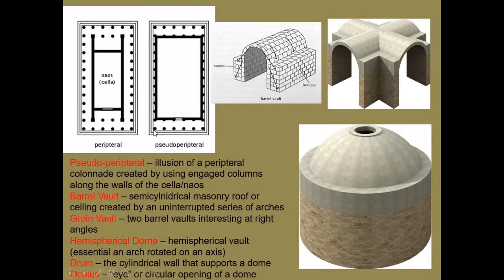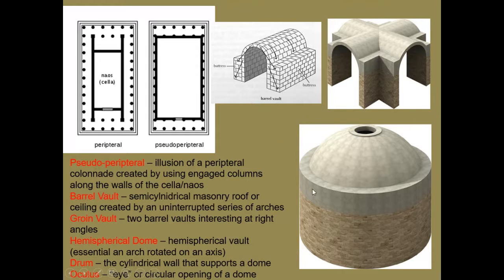The new design starting here in Rome is what we refer to as pseudo-peripteral — peripteral meaning columns all the way around the outside, pseudo-peripteral being the fusion of those continuous columns created by engaged columns along much expanded walls. The concept of a barrel vault comes from extending an arch into a long hallway. We now have that smooth rounded barrel created by stacking multiple arches one behind the other. When two such barrel-vaulted hallways at 90-degree angles intersect, we have what we call a groin vault.